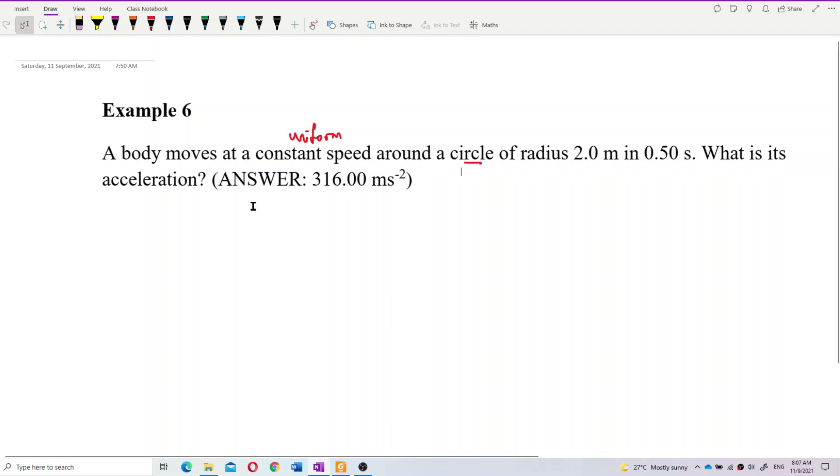Uniform speed, circle radius 2 meter, 0.5 second. What does it mean? That means it moves around a circle. It completed a circle in 0.5 second.